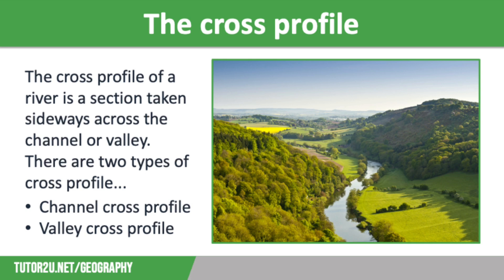The cross profile of a river is a section taken sideways across a channel or the valley. There are two types of cross profile: the channel cross profile, which only includes the river, and the valley cross profile, which includes the channel, the valley floor and the slopes of the valley sides.